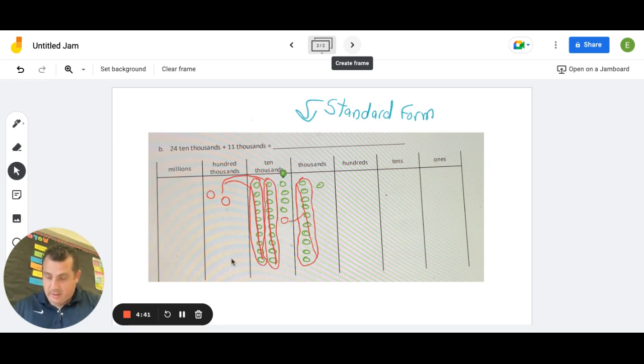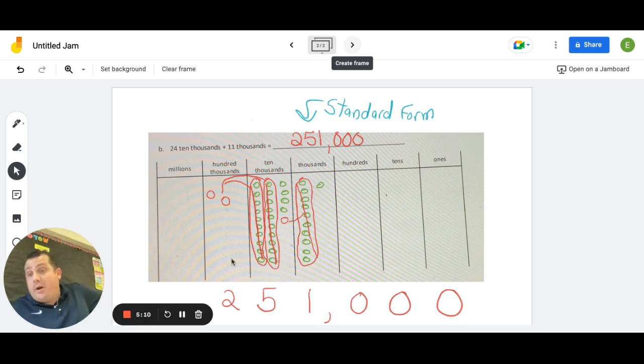So now we look, I have 2 100,000s, 5 10,000s, and 1,000. And then I have no hundreds, no tens, no ones. And I put my comma in, 1, 2, 3, comma. And I can write up here, 251,000.